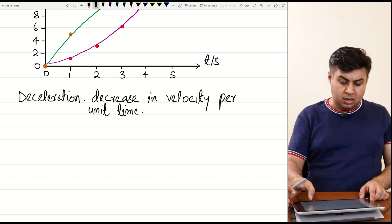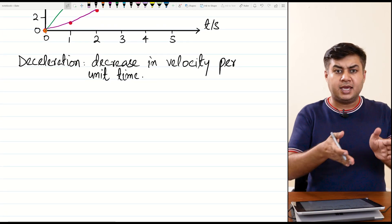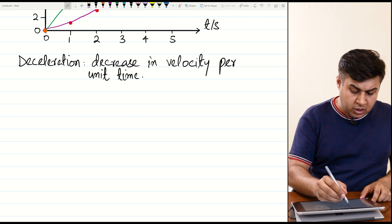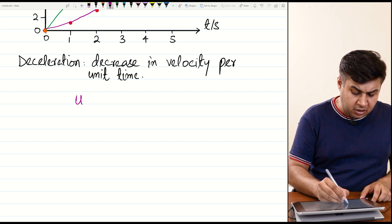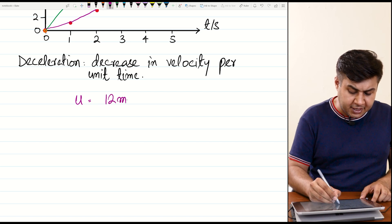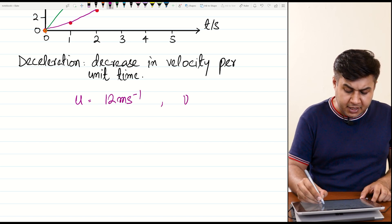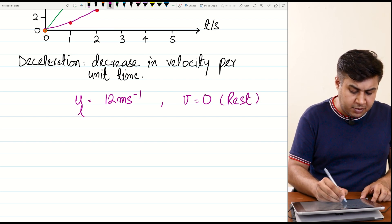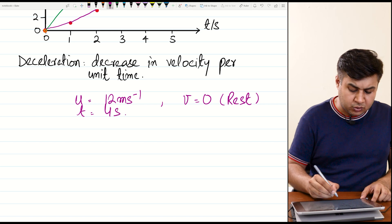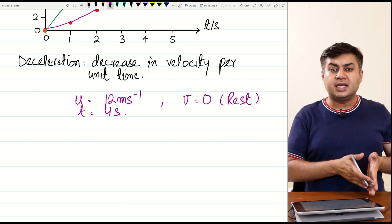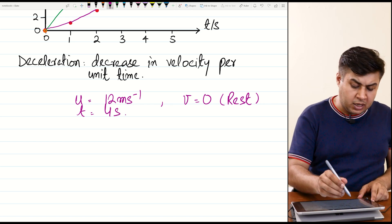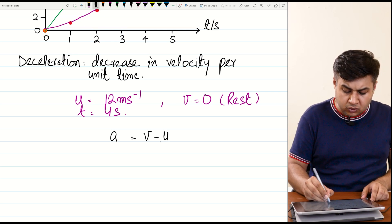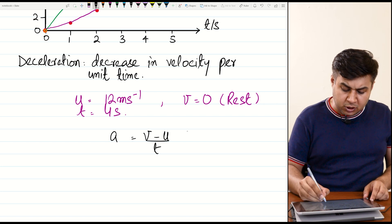An object or car decelerates when you apply the brakes, and on applying brakes the car's speed starts to reduce. So deceleration is decrease in velocity per unit time. For example, if the initial speed is 12 m/s and the final speed is 0 — coming to rest — in 4 seconds, what is the deceleration? Using the same formula: a = (v − u) / t.